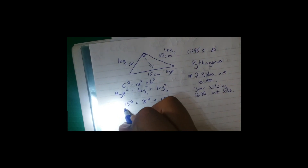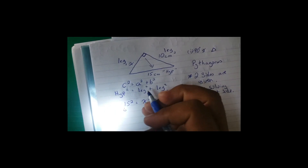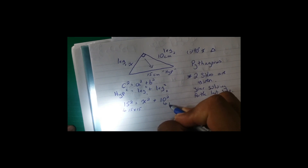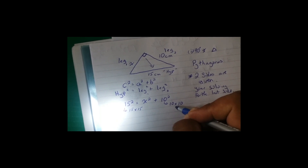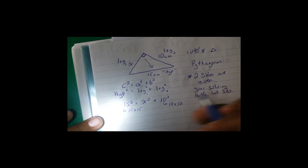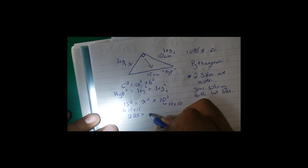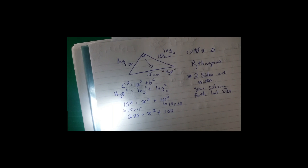The next thing we need to do is find what 15 squared is, because anything squared is that same number times itself. So 15 times 15 is 225, and 10 times 10 is 100. So we have: 225 = X² + 100.